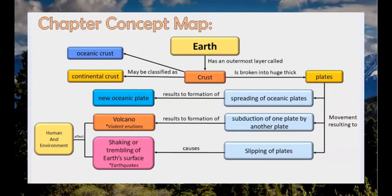We'll start by looking at the chapter concept map. The Earth has an outermost layer called the crust, which may be classified as oceanic crust and continental crust. The crust is broken down into huge thick plates, with movement resulting in spreading of oceanic plates, subduction of one plate by another, or slipping of plates. Spreading results in new oceanic plates; subduction results in volcanoes and violent eruptions; and slipping causes shaking of the Earth's surface, or what we call earthquakes.